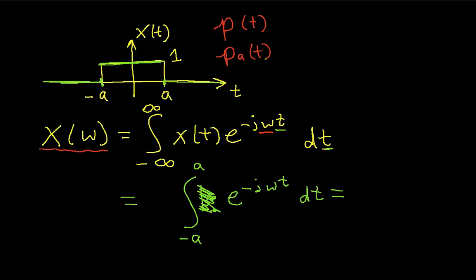I'm just integrating an exponential over a finite range. This is a fairly straightforward integral. So I have 1 over negative j omega. That's this constant out here in front of the t in the exponential. And then I will evaluate this e to the minus j omega t going from negative a to a.